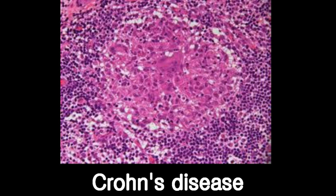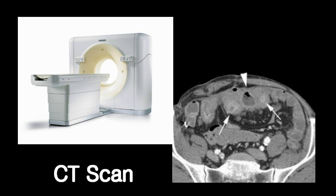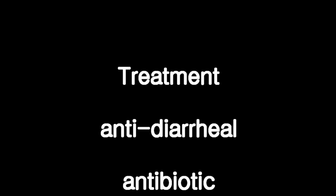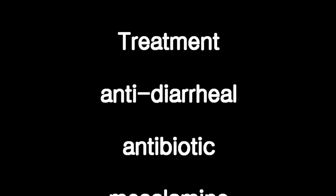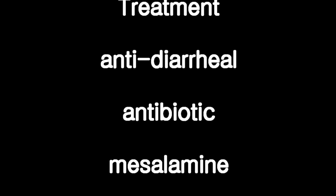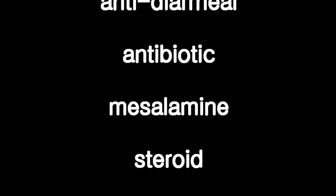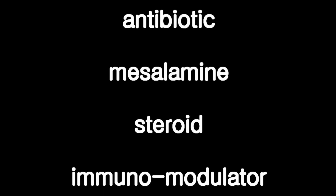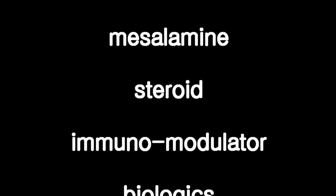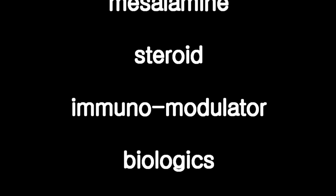Radiologic examinations such as abdominal CT scan may also be necessary to establish the diagnosis. The treatment of inflammatory bowel disease is aimed at decreasing symptoms and the inflammatory process associated with IBD. An initial treatment may include antidiarrheal, antibiotic, and mild anti-inflammatory agents such as mesalamine. As the disease advances, stronger medications including steroids and immunomodulators may become necessary.